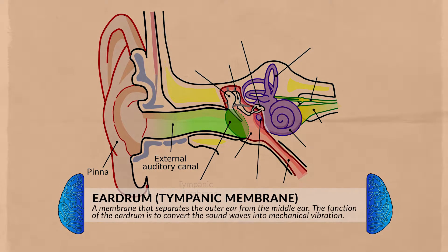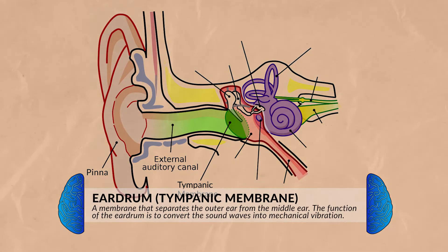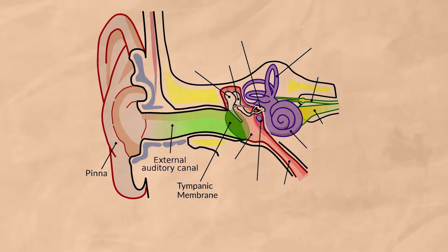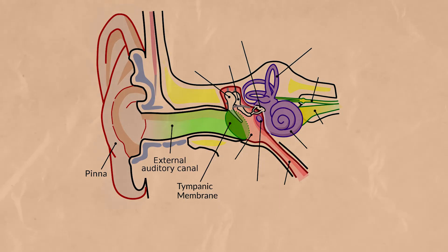The eardrum, also called the tympanic membrane, is very sensitive. As the air in the auditory canal vibrates, that causes the eardrum to vibrate and transform the sound vibrations into mechanical vibrations of the bones of the middle ear.